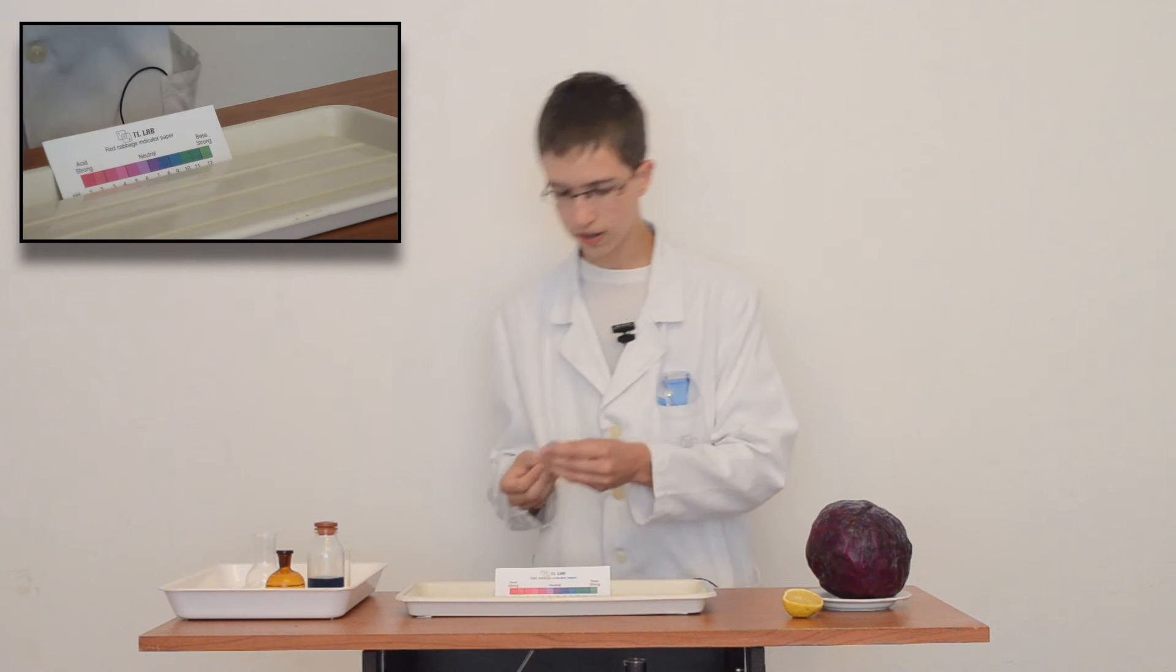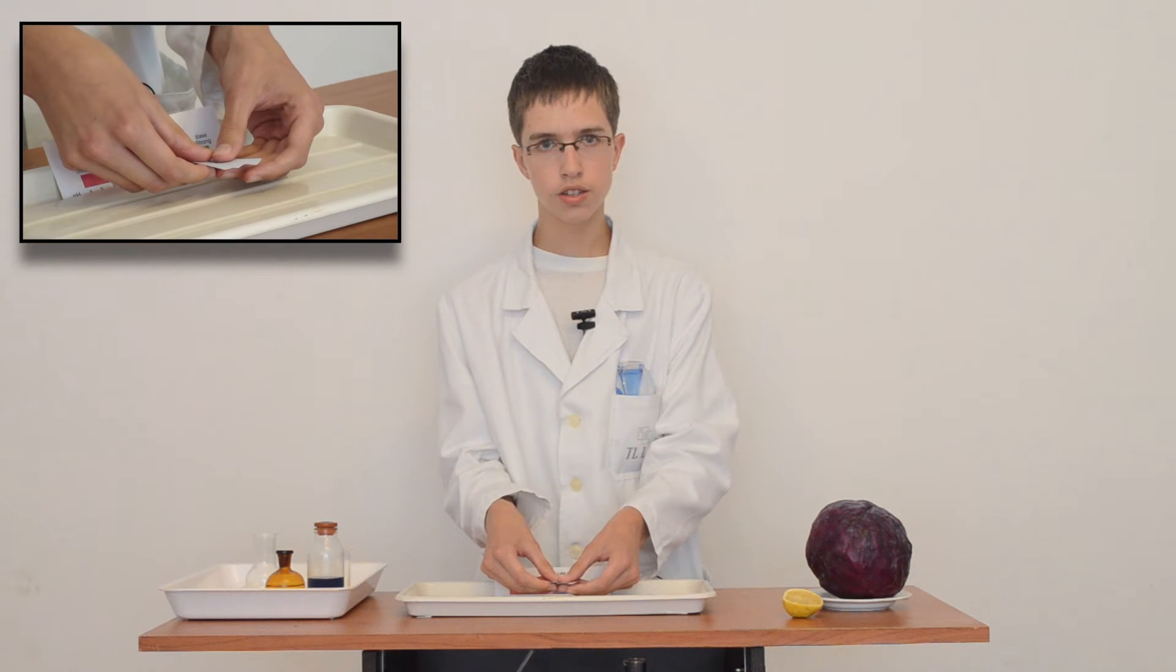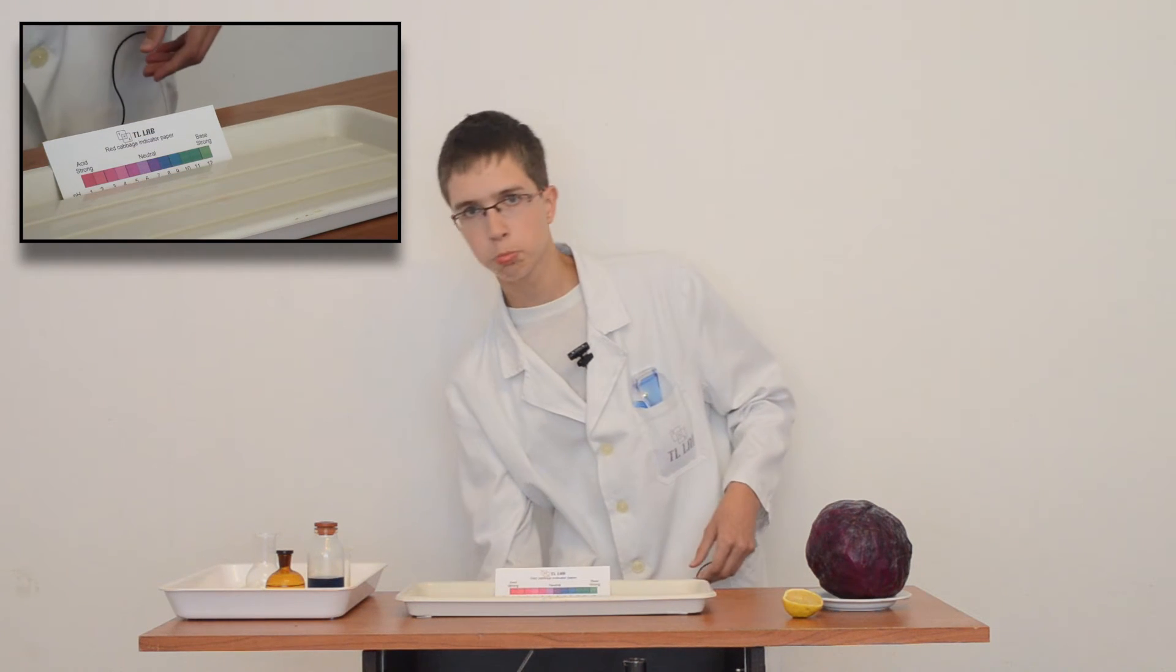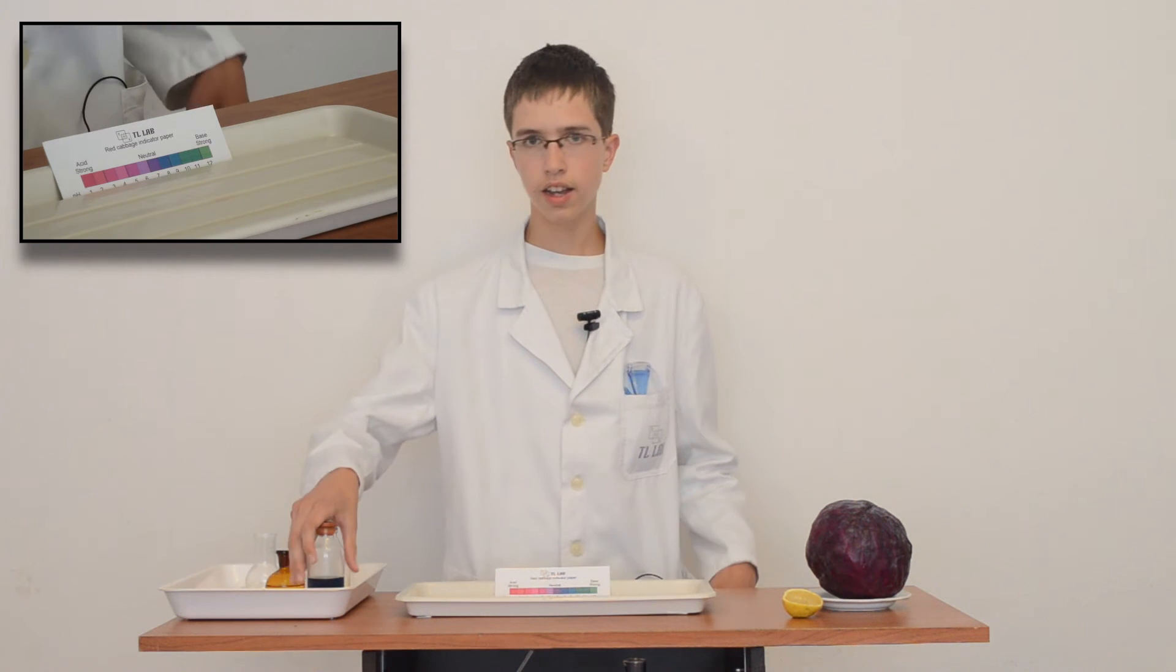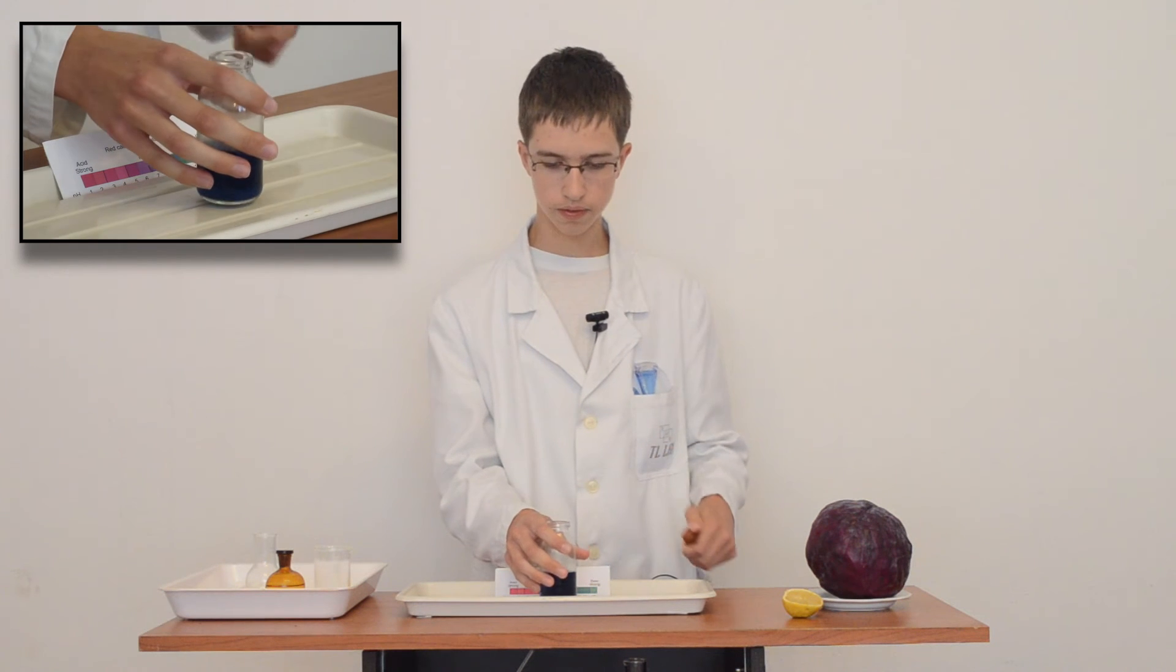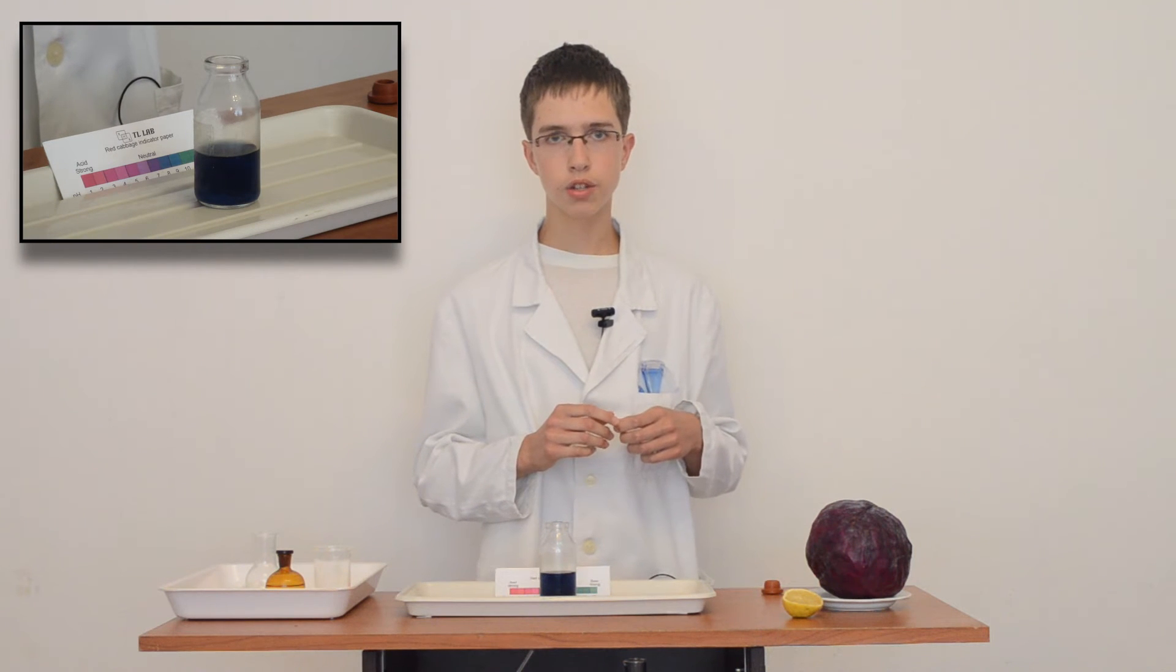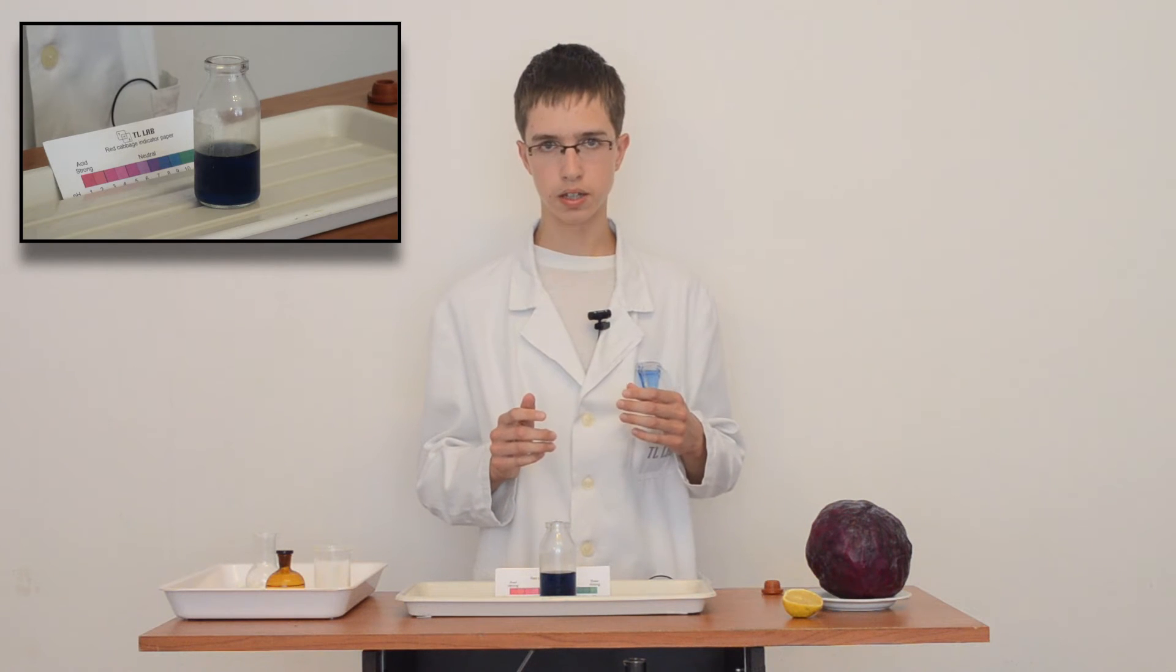Here I have indicator papers I already soaked in indicator liquid and dried. And here I have liquid I made from red cabbage. It is important to say that with red cabbage you can get indicator in scale from 1 to 12 because of its chemical properties. Now we can try a few experiments.